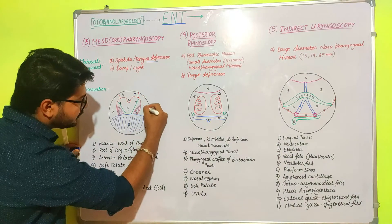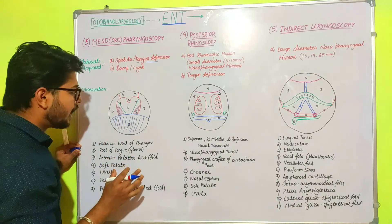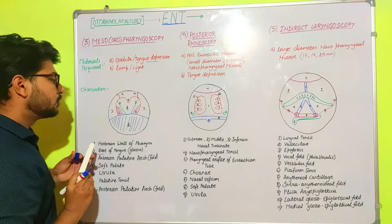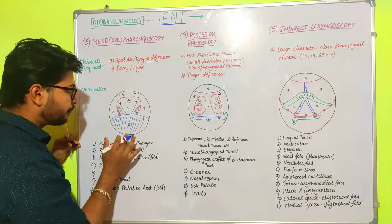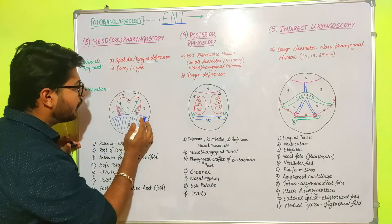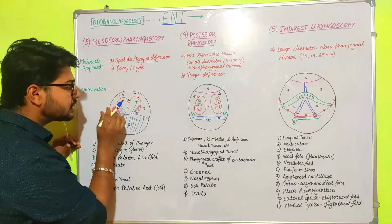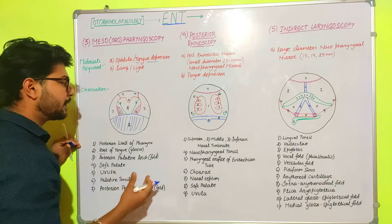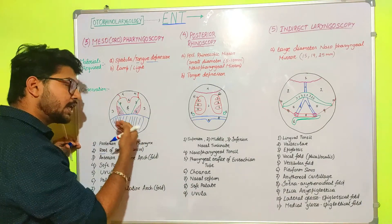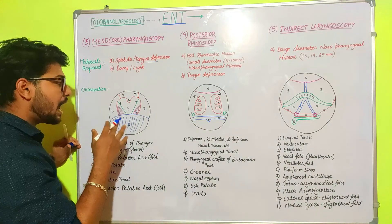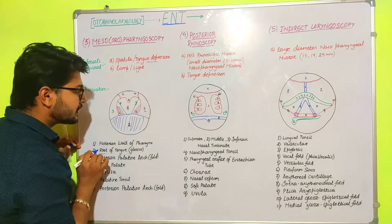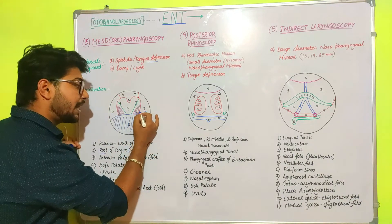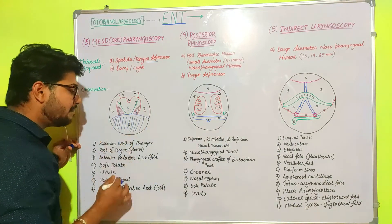Number three represents the anterior palatine arc or anterior palatine fold. Number two is the root of tongue which we have depressed. Number four represents the soft palate, and number five is the uvula, which is attached to the soft palate. Number seven represents the posterior palatine arc, while number three was the anterior palatine arc. In between the anterior and posterior palatine arcs, we have the palatine fossa, and in the palatine fossa we have the palatine tonsil.